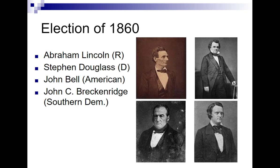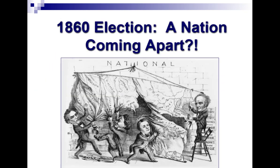The election of 1860 is going to have four people running. Abraham Lincoln runs as a Republican. His old friend — and by friend I mean bitter enemy — Stephen Douglas is going to run for the Democrats. John Bell is going to run as part of the American Party. And then John C. Breckinridge is going to run as a Southern Democrat. The Democrats have split on the issue of slavery, much like the Whigs before them, and that's going to cause some issues. There's even a political cartoon at the time showing these four candidates tearing out their sections of the country — it was a very divisive election.